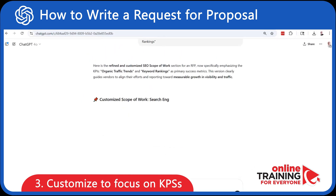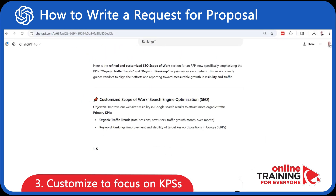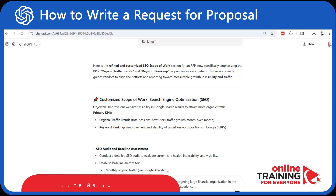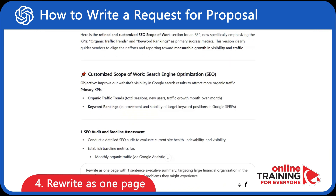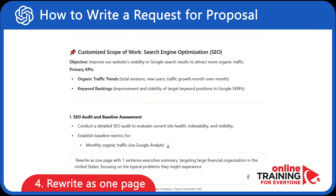We're making great progress, but the result seems too long. Let's ask ChatGPT to rewrite it as one page with a one-sentence executive summary at the top, targeting large financial organizations in the United States and focusing on typical problems they might experience.